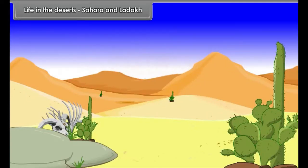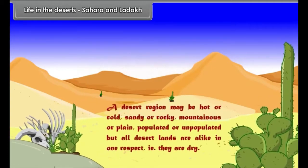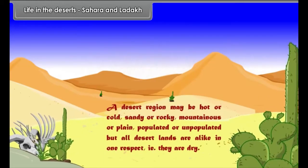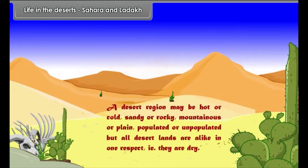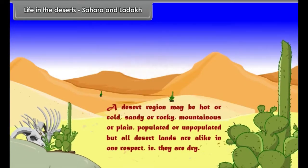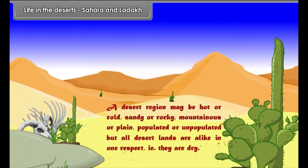Life in the Deserts: Sahara and Ladakh. A desert region may be hot or cold, sandy or rocky, mountainous or plain, populated or unpopulated. But all desert lands are alike in one respect — they are dry.